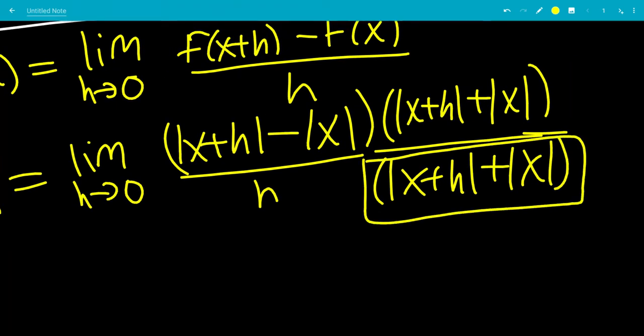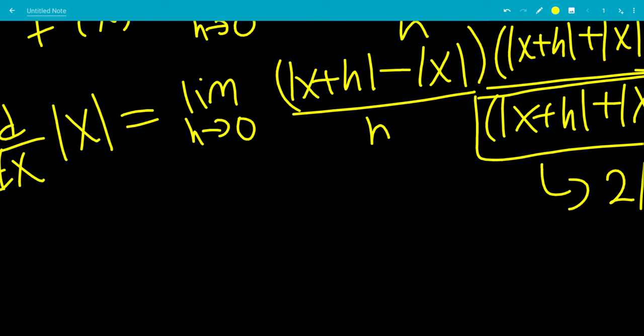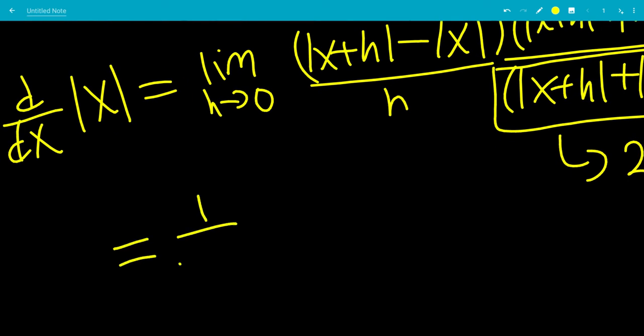Plugging in h goes to zero, this goes to the absolute value of x plus the absolute value of x, which is two times the absolute value of x. So we can multiply that out of the limits. This is one over two absolute value of x times the limit as h goes to zero.